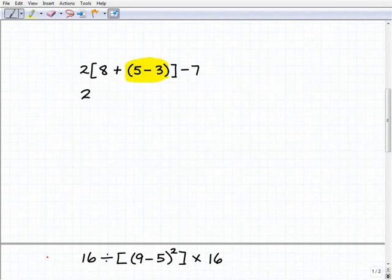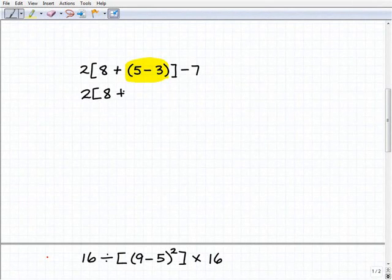So I'm going to rewrite the problem. This is the way you should show your work. You really should try to model how I'm doing this. So I have two bracket eight plus now five minus three is of course two and bracket there minus seven.